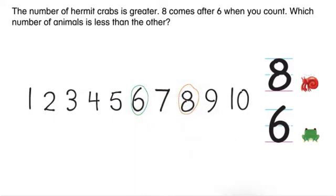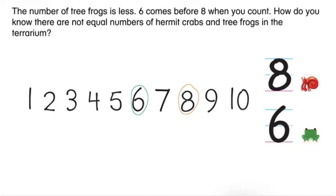Which number of animals is less than the other? The number of tree frogs is less. Six comes before eight when you count. How do you know there are not equal numbers of hermit crabs and tree frogs in the terrarium?